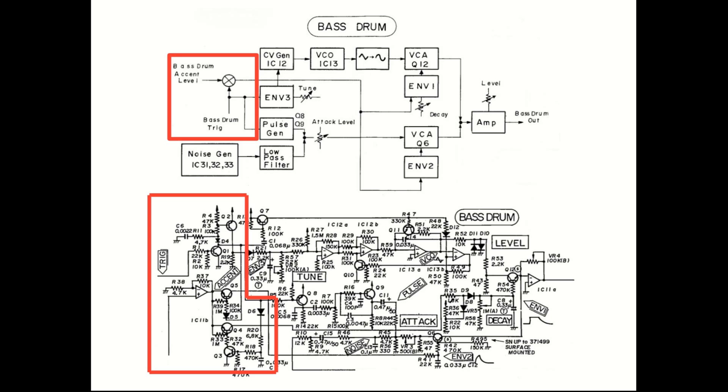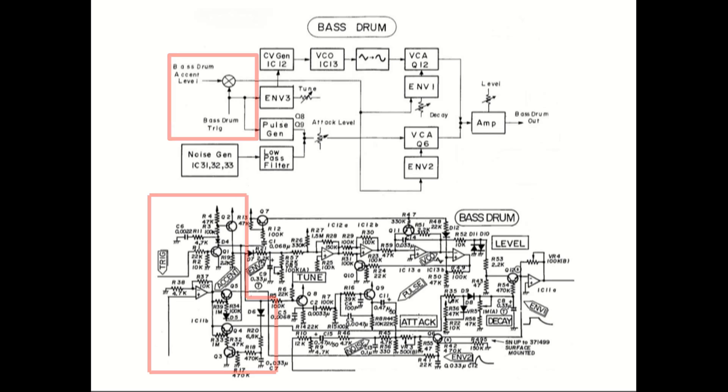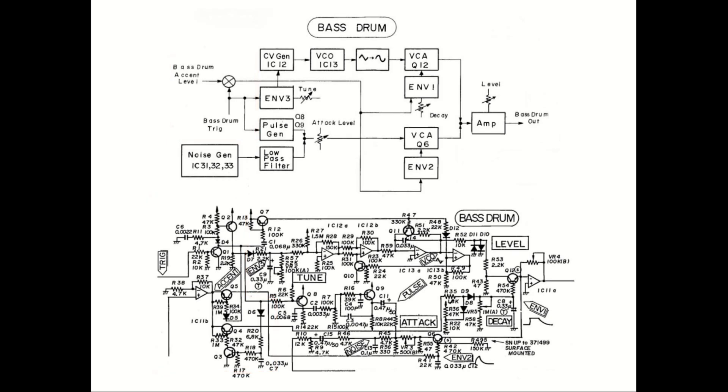That's our multiplier that controls the envelope generators 1 and 2. Next, we have the envelope generator 3 and the CV generator that controls the pitch of the VCO. Envelope 3 is triggered by the delayed trigger signals through diode D7.